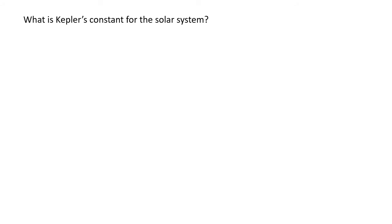Second problem: we want to find Kepler's constant for the solar system. Notice there are no numbers in this question — you have to know what to do. We need the second form of Kepler's third law: the average distance of a planet from the Sun cubed, divided by the square of its orbital period, is a constant — Kepler's constant. To solve this, we just need to find any object orbiting the Sun whose average distance and orbital period we know and plug in the numbers.